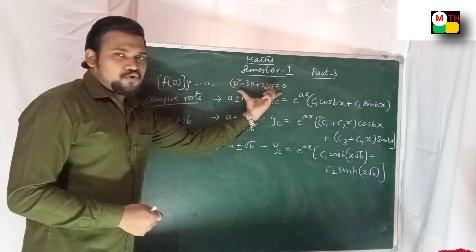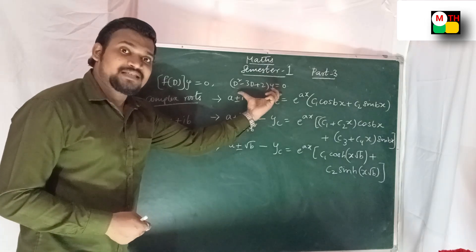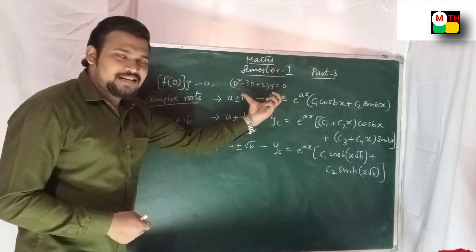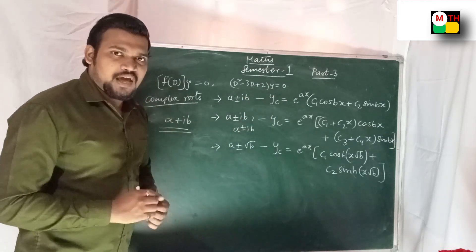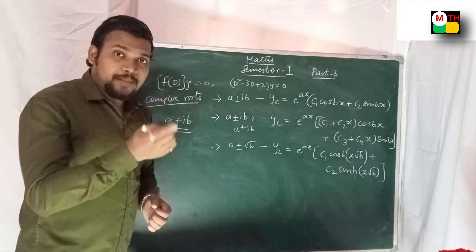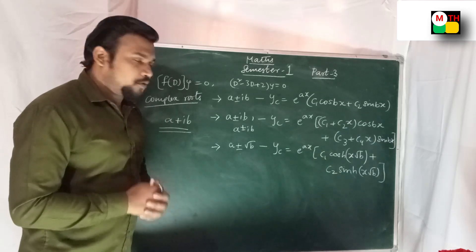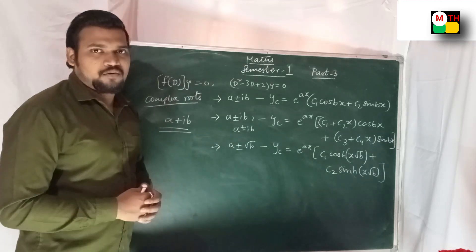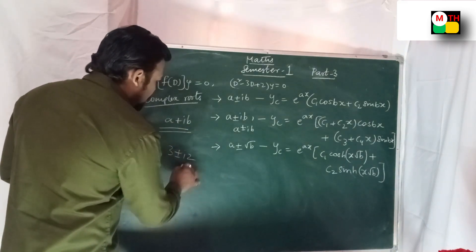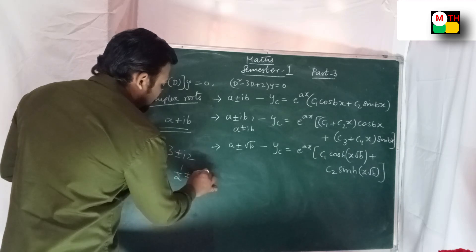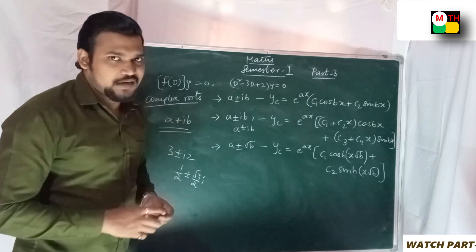So the question is: what is the general solution? What is the general solution? Yc — the complementary function. The complex roots are of the form A plus or minus iB. For example, numbers like 3 plus or minus 2i, or 1/2 plus or minus (root 3 / 2) i. These are complex roots.